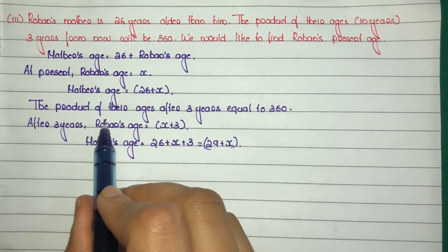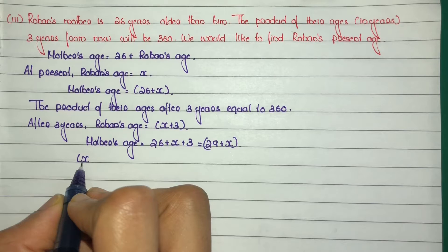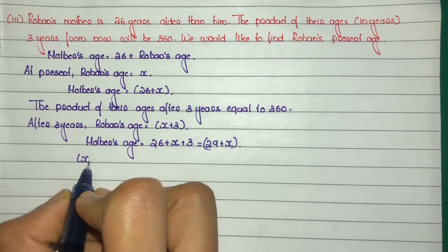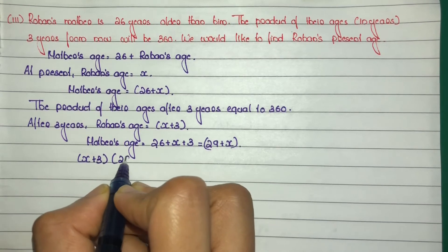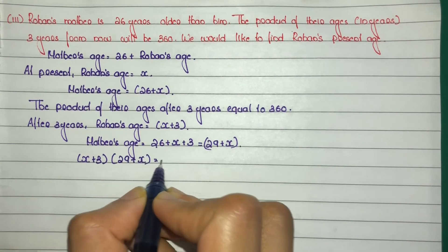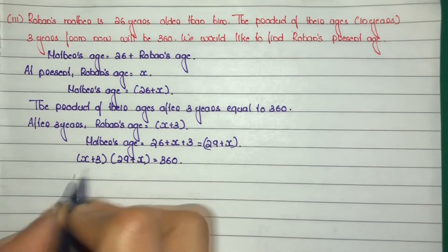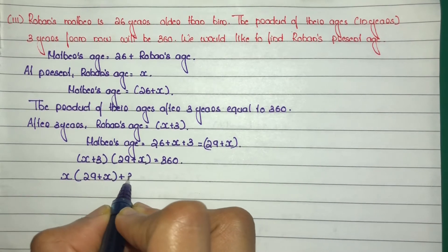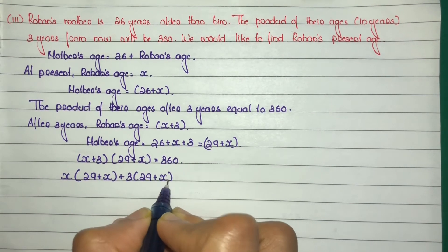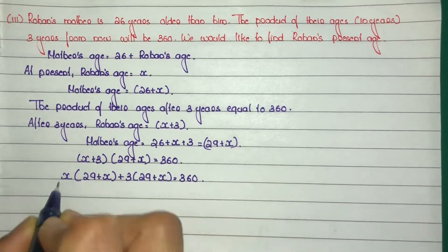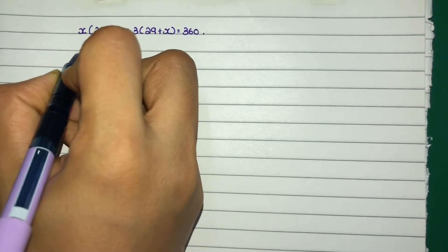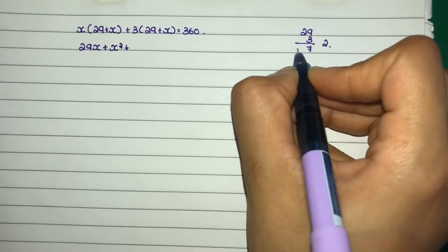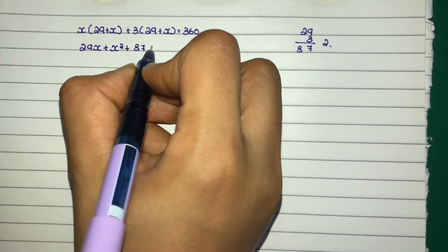After 3 years, the product of their ages equals 360. That is (x plus 3) into (29 plus x) equals 360. Expanding: x into 29 plus x, plus 3 into 29 plus x gives x squared plus 29x plus 3x plus 87, equals 360.